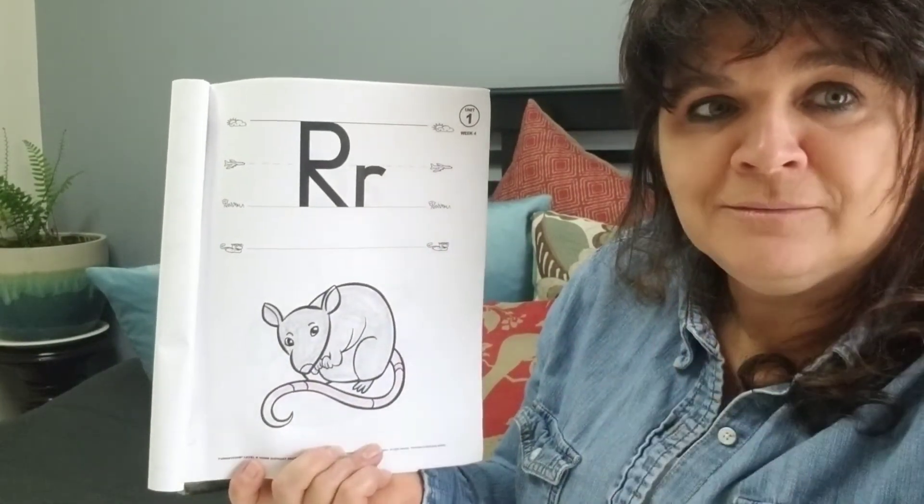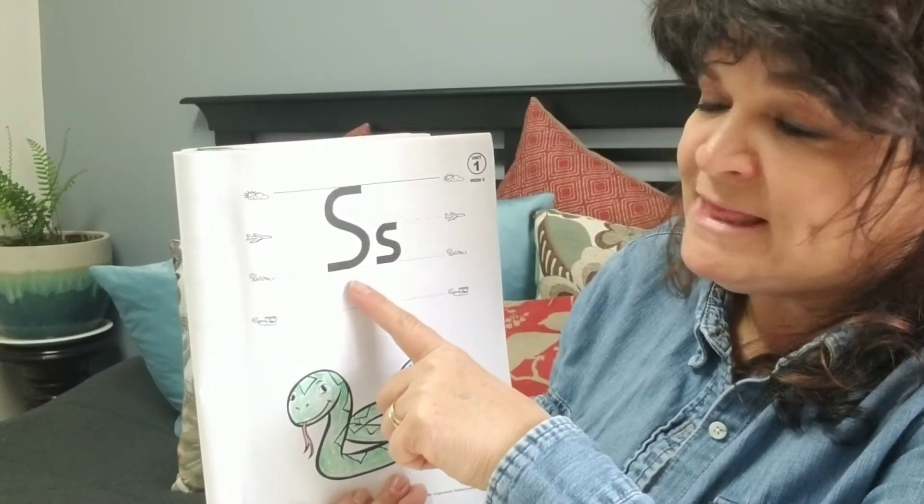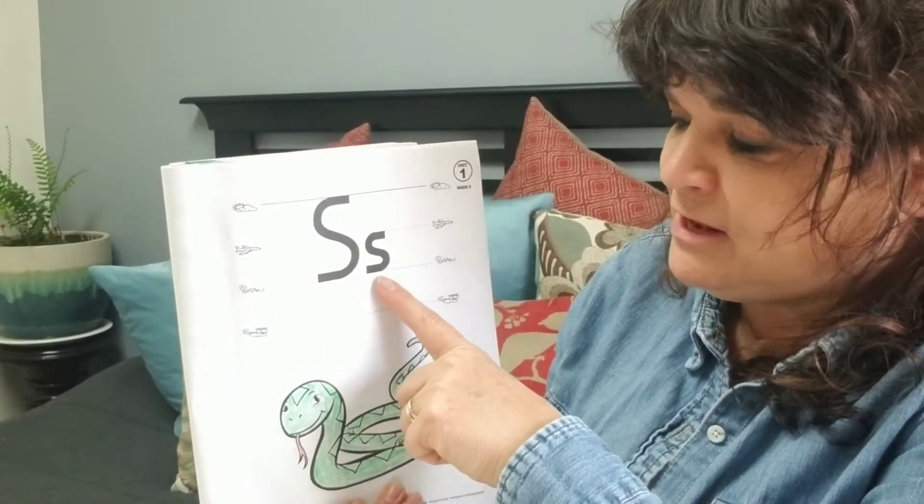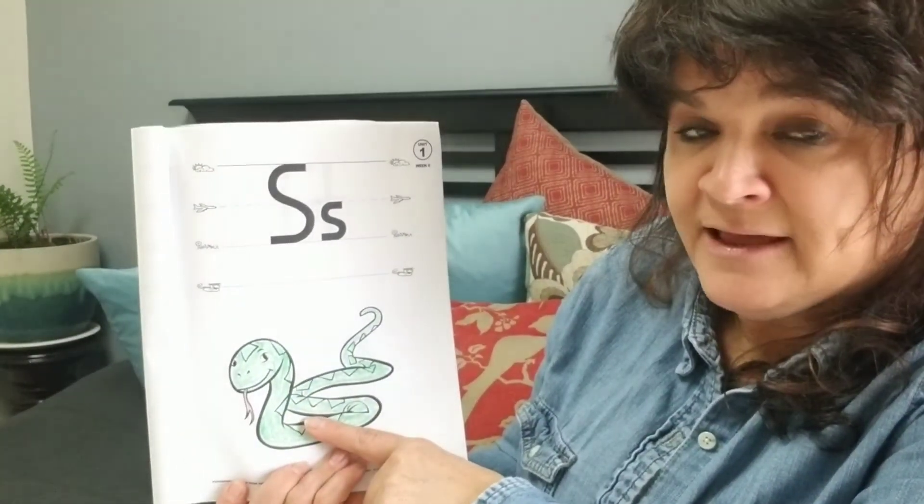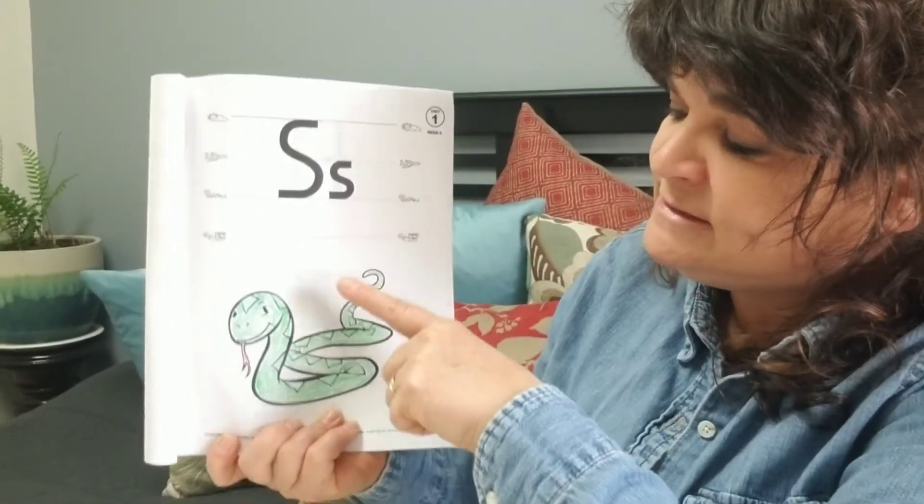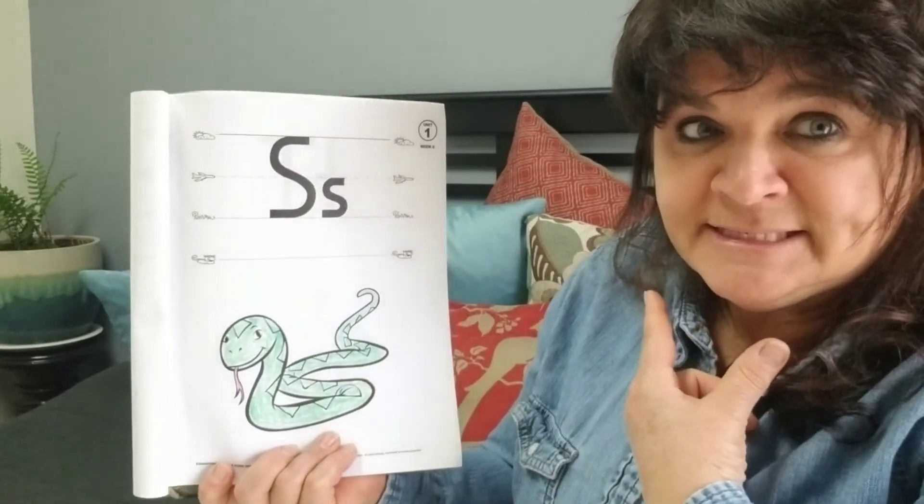This is the letter S. Big S. Little S. S begins words like snake. S. Snake. Ssss.